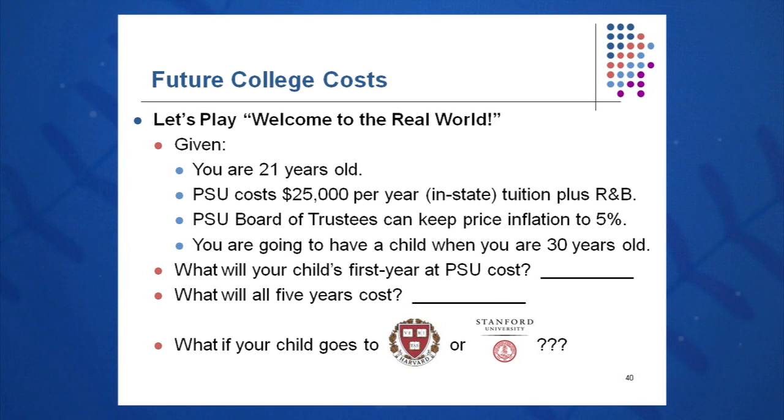And then what will happen if your child decides to go to an Ivy League school, a Harvard, a Cornell, a Penn, or other prestigious private university? Again, you can calculate that using the present value, future value equation.